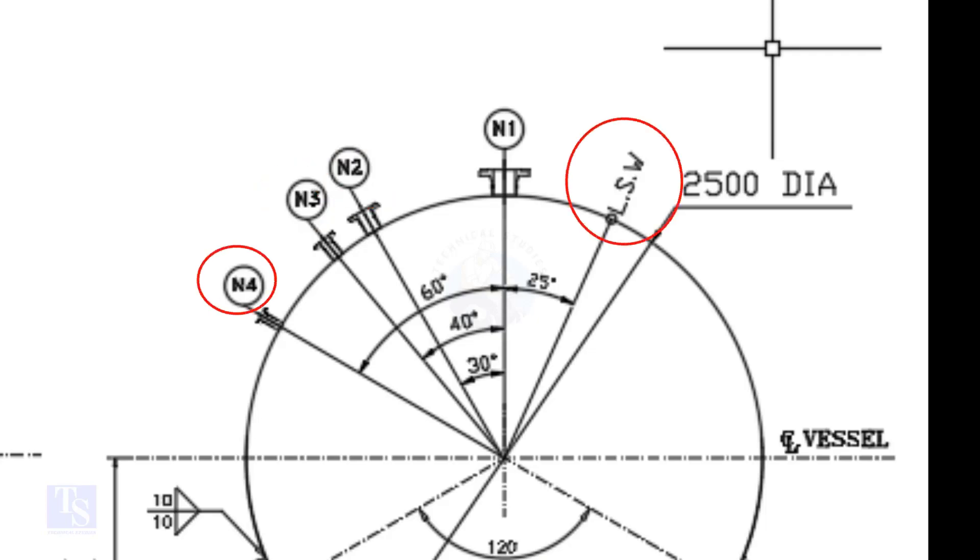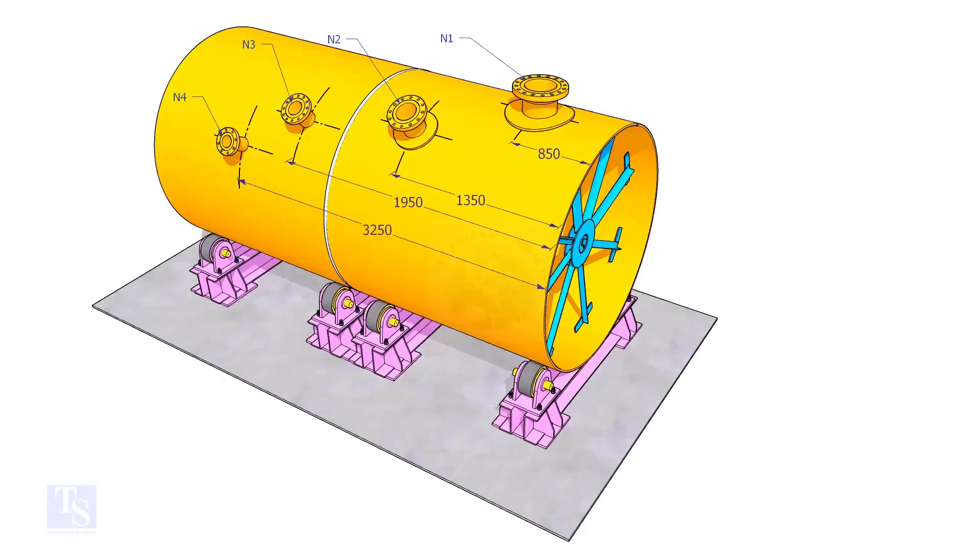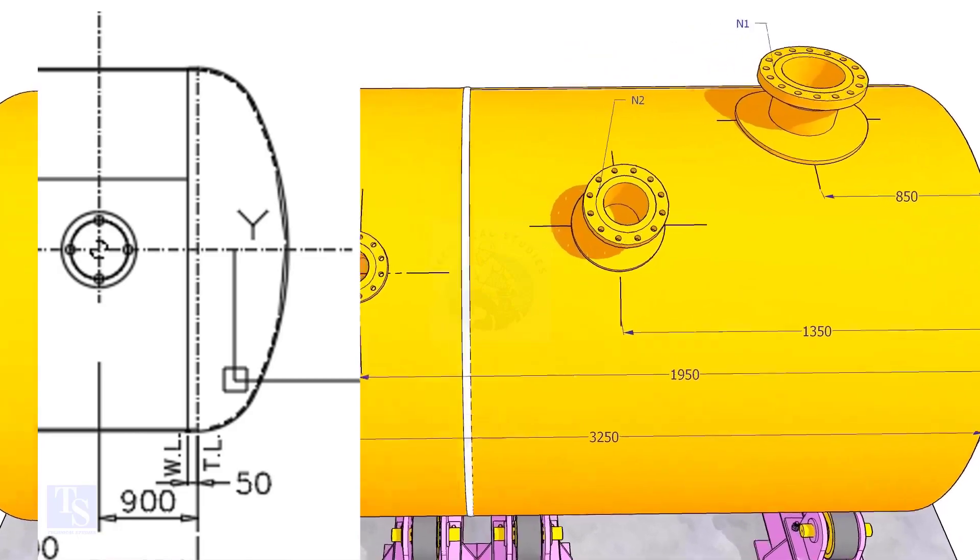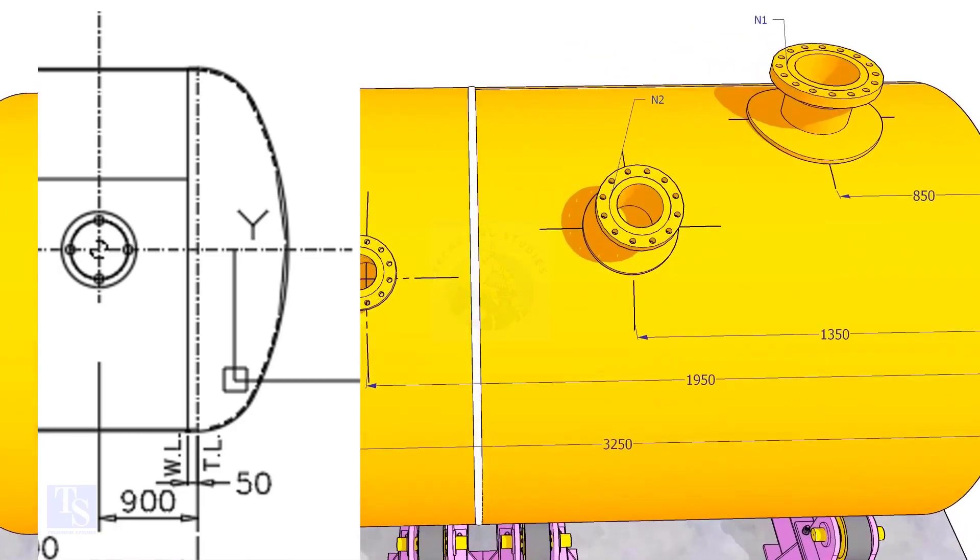Nozzle N1 is turned 25 degrees from LSW. As the straight face 50 millimeters is on the dish end, we need to subtract 50 millimeters from the overall dimension.